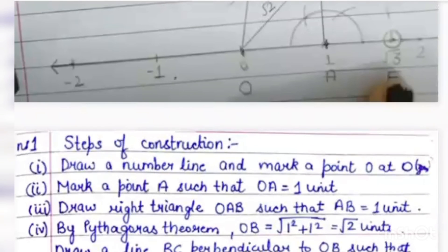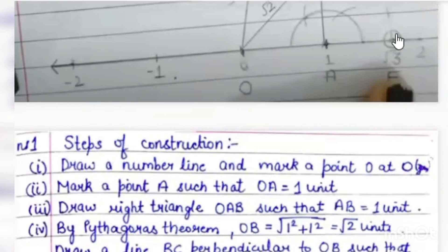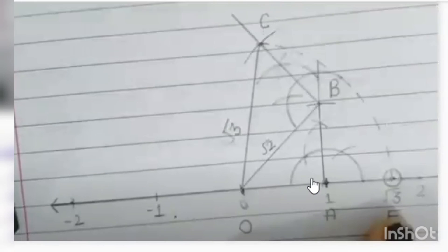By help of arc, with center O and radius OC, we draw an arc. We take √3 as the radius with the compass and get point E on the number line. So OE is equal to √3. This is the way to draw and represent the position of irrational numbers on the number line.